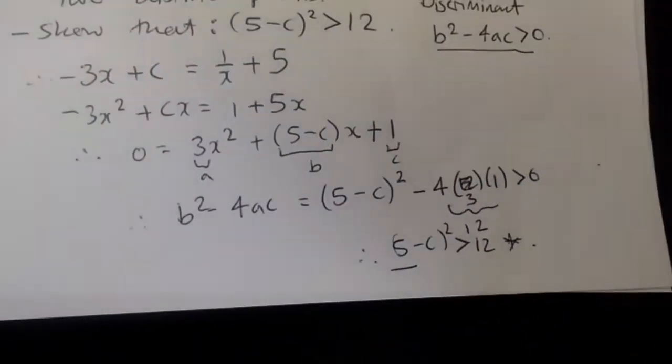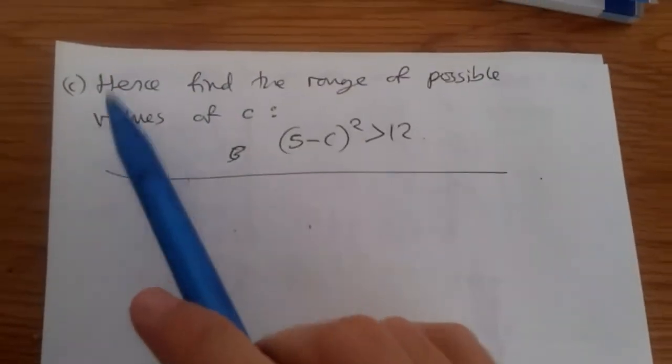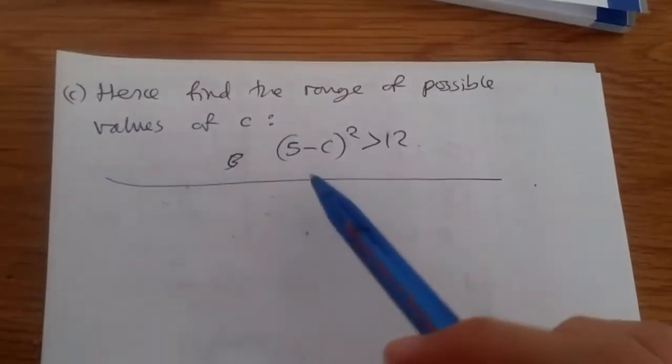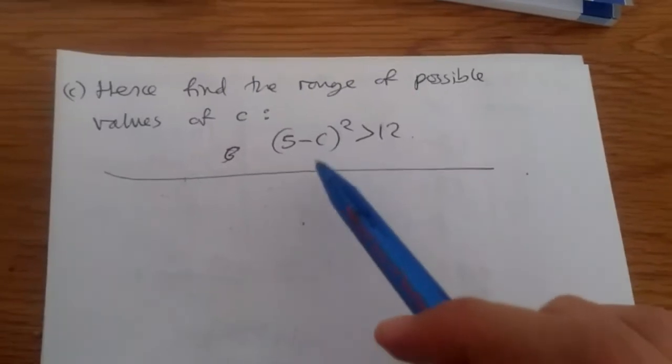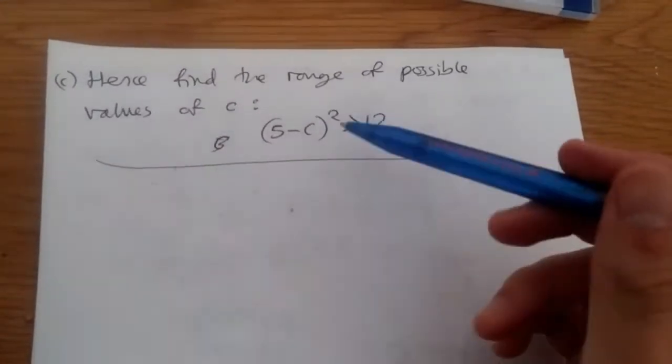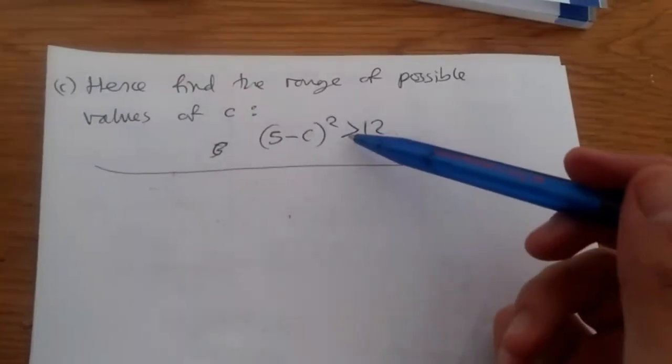Now, let's move on to part c. For this part, now we need to find the range of possible values of c using the equation which is deduced. So, just treat this as an equal sign. Then, pretty much, we just need to solve the values of c and attach inequalities.